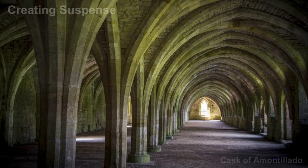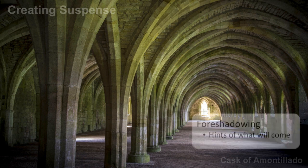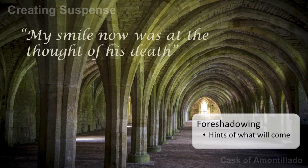Now let's turn to Poe's way of creating suspense. One thing is the narrator being mad. Another thing is what we call foreshadowing — foreshadowing means hints of what will come. And there are many foreshadowings in this story. In the beginning he is very obvious: 'My smile now was at the thought of his death.' This is a very clear foreshadowing, which makes the reader expect something horrible to happen.